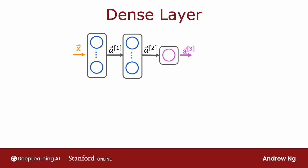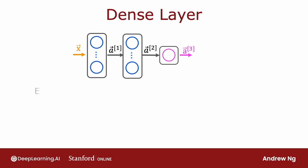To recap, in the dense layer that we've been using, the activation of a neuron in, say, the second hidden layer is a function of every single activation value from the previous layer. But it turns out that for some applications, someone designing a neural network may choose to use a different type of layer.